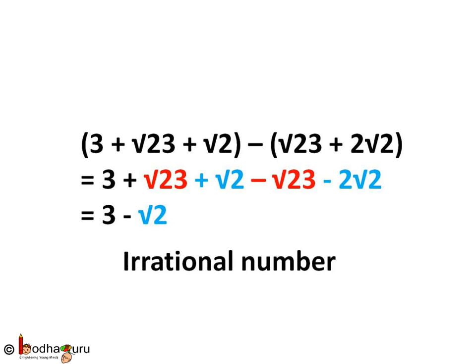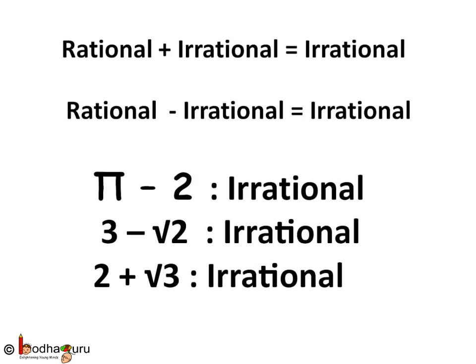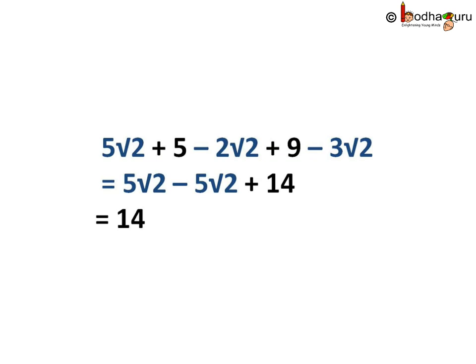In short, when a rational number participates with an irrational number in an addition or subtraction operation, the outcome is irrational. For example, π − 2 is irrational, 3 − √2 is irrational, 2 + √3 is irrational. Sometimes we are given a big arithmetic expression and told to find whether it is rational or not. Only if all the irrational numbers get cancelled out due to opposite signs (plus and minus) may we get a rational number; otherwise the answer will be irrational.